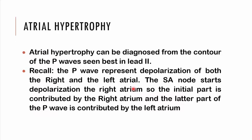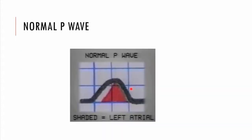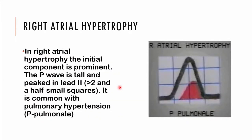The initial part of the P wave is contributed by the right atrium, and the later part by the left atrium. With right atrial hypertrophy, there is a very prominent initial component, making the P waves appear peaked. These P waves are only considered peaked if they are greater than two and a half small squares. They are a feature of right atrial hypertrophy, associated with pulmonary hypertension, and these P waves are referred to as P pulmonale.